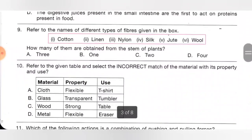Ninth one: refer to the names of different types of fibers given in the box. How many of them are obtained from the stem of plants? Cotton is obtained from fruit; linen from stem; nylon is a synthetic fiber; silk from silkworm; jute from stem; wool from hair of wool-yielding animals. So linen and jute are obtained from the stem of plants. Option C is the correct answer.